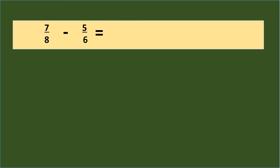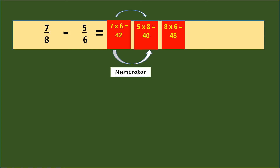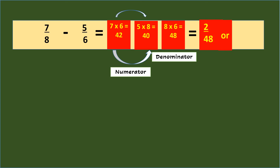Another way to subtract dissimilar fractions like 7/8 minus 5/6 is to apply cross-multiplication. Cross-multiply the numerator 7 of 7/8 with the denominator 6 of 5/6 to get 42. Then multiply the numerator 5 of 5/6 with the denominator 8 of 7/8 to get 40. Subtracting 42 minus 40 is 2, and that will be the numerator. For the denominator, multiply 8 times 6 to get 48. So, 7/8 minus 5/6 equals 2/48, or simplifying it is 1/24.